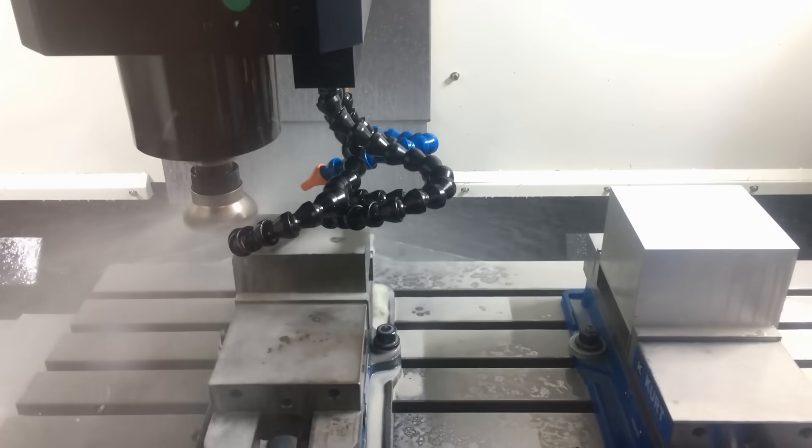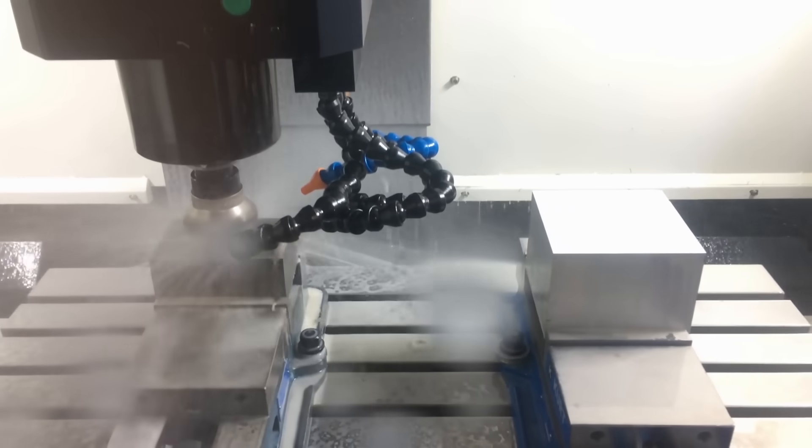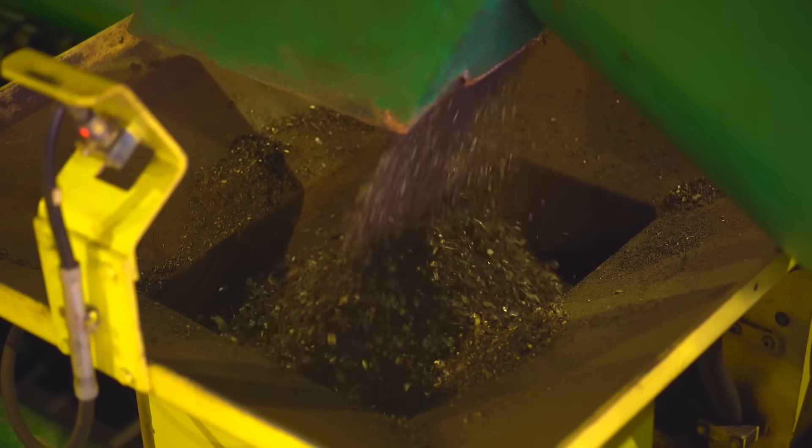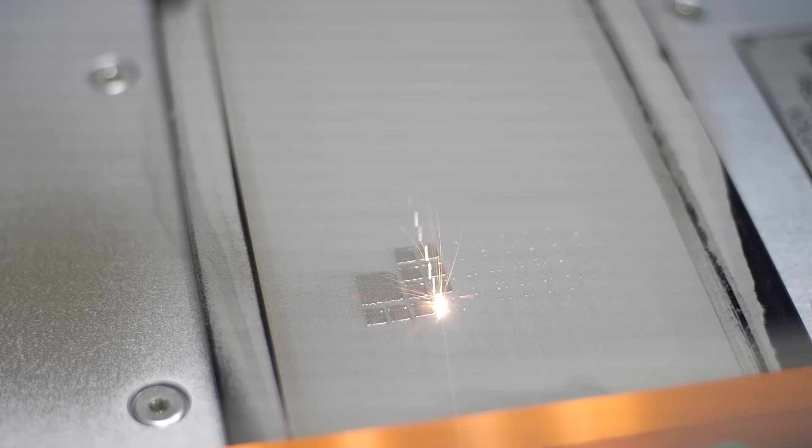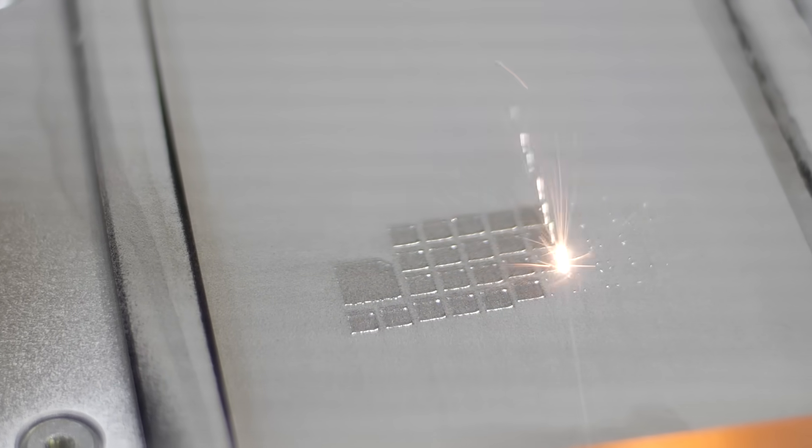Imagine taking a material like titanium alloy, which can cost upwards of $30 per kilo, and then throwing away 90% of it in the manufacturing process. Needless to say, this is a massive source of increased costs that 3D printing could help reduce.